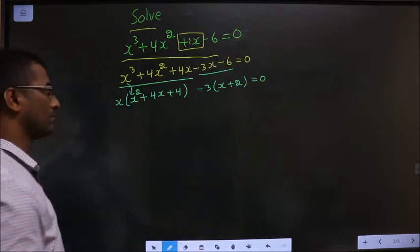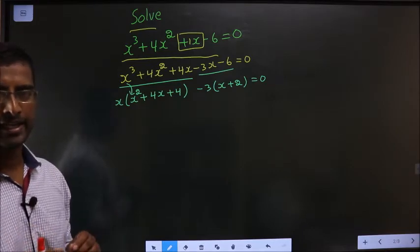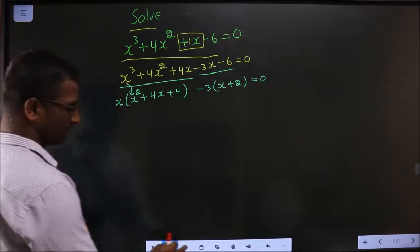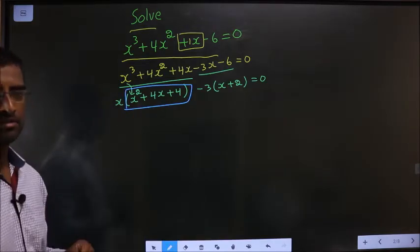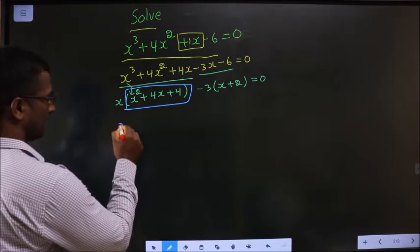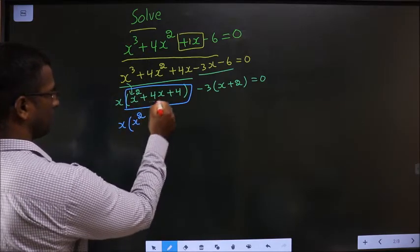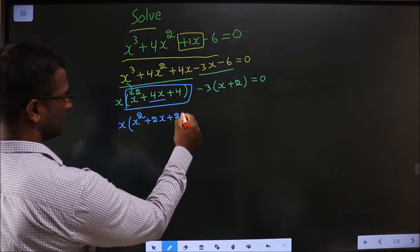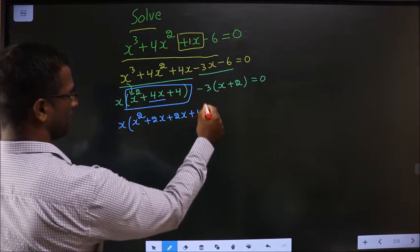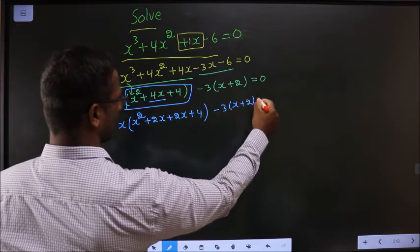Now how do I simplify? Did you get any catch? We will factorize it. That is x times x square. In place of 4x now I will be writing plus 2x plus 2x plus 4 minus 3 times x plus 2 equal to 0.